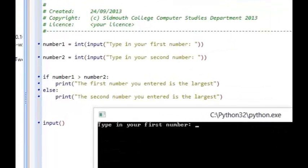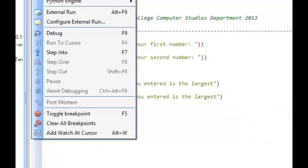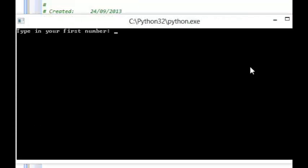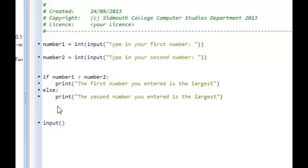Type in your first number: 10. Type in the second number: 12. The second number you entered is the largest, which is correct. And I can test that fully by running it again. This time saying that the first number is 12 and the second one is 10. And there the first number you've entered is the largest. So my program is working well. I've got an if-else statement working fine.